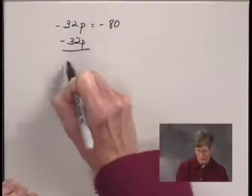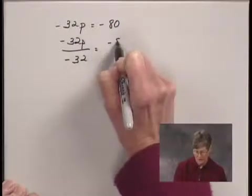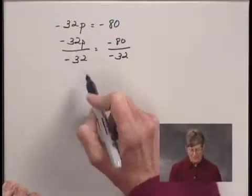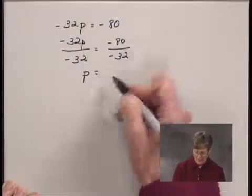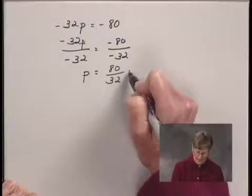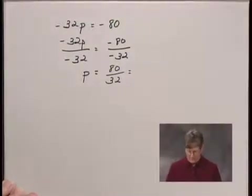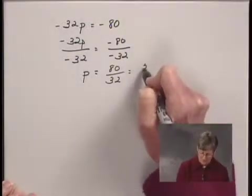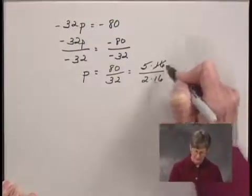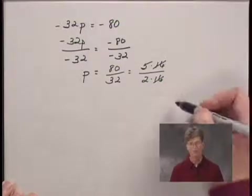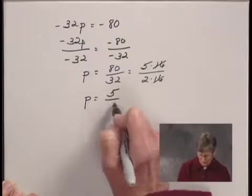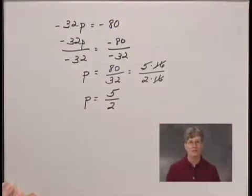So I have negative 32p over negative 32 equals negative 80 divided by negative 32. Negative 32p over negative 32 just gives me p on the left hand side. And on the right hand side, I have 80 over 32 — dividing a negative number by a negative number. I want to simplify 80 over 32. I see that each of these numbers has a factor of 16: 80 is 5 times 16, and 32 is 2 times 16. I can cancel the 16s common to the numerator and denominator, removing a factor of 1 in the form of 16 over 16. That leaves me with p equals 5 over 2. So the solution of this equation is 5 over 2, or 5 halves.